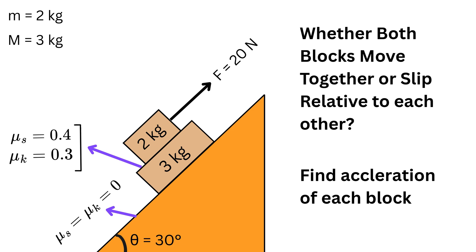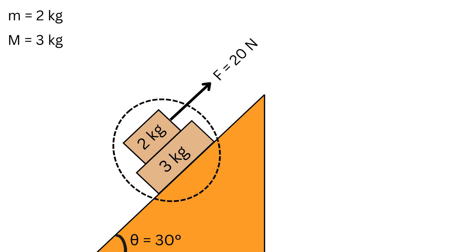Now, in order to solve this, first we will assume both the blocks move together and we will find the common acceleration. So, we will treat the two blocks as a single system with total mass M_t as 2 plus 3 or 5 kg.